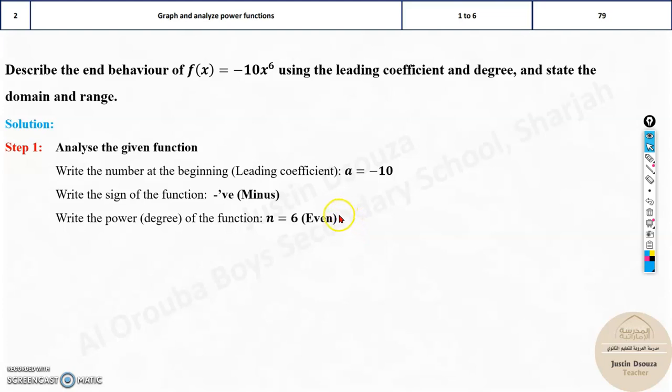Even means it's a parabola. It will be either like this if it was positive, or like this if it's negative. If it was cubic, then it's like this if it's positive. It will decrease if it's negative.